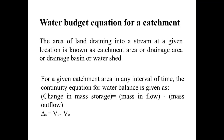In lecture number three, the topic we will study today is the water budget equation for a catchment area. The area of land draining into a stream at a given location is known as catchment area, drainage area, drainage basin, or watershed. Any area which drains into a stream at a given location is known as the drainage area.